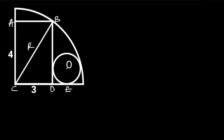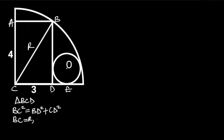To do so, let's consider triangle B, C, D. Triangle BCD is a right triangle. So, from Pythagoras' theorem, BC squared is equal to BD squared plus CD squared. BC is equal to R, BD is equal to 4, and CD is equal to 3.